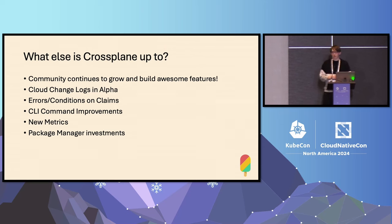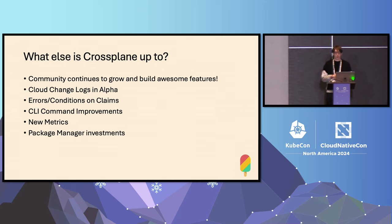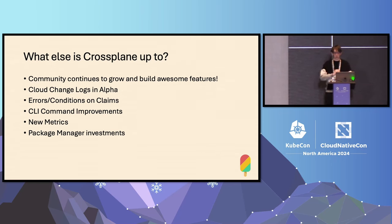One of the other things the community has been talking about is needing better observability on Crossplane — you're dealing with reconciling potentially thousands of resources and you need a really strong observability status for that. New metrics have been added to evaluate things like reconciliation time and how many interactions you're having with your cloud provider. There's also been investment in Package Manager, with the idea of automatically upgrading dependencies, streamlining the pulling of private images and private packages, and ultimately having a single CRD that can manage your entire control plane.